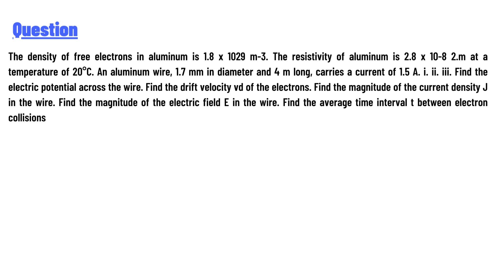Part 1, 2, 3: Find the electric potential across the wire. Find the drift velocity vd of the electrons. Find the magnitude of the current density J in the wire.